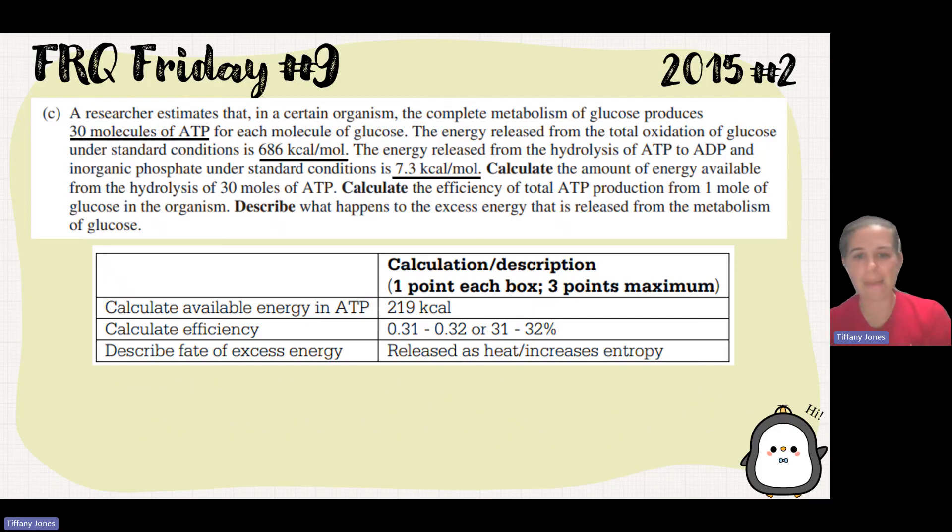They then want you to calculate the efficiency of the total ATP production. In order to do that, I just take the amount that I just calculated, 219, and I divide it by 686 because that's how much there should be if I was doing it in a lab. And that tells me how efficient the system is. If I divide that, I should get 0.31 or 0.32, which gives me 31 or 32 percent.